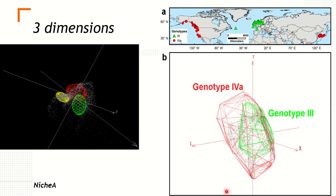We can also work in multiple dimensions. These are plots showing three dimensions — ellipsoids of three species, or the models of three species, in the environmental background or the cloud of environmental conditions available for the species. Here we have two lineages of five species that also show the overlap or similarity of the two models.